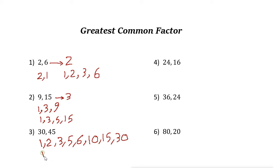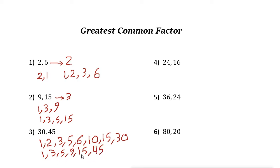For 45, the factors are 1, 3, 5, 9, 15, and 45. Looking at the common factors of 30 and 45, the biggest number they have in common is 15, so the GCF of 30 and 45 is 15.